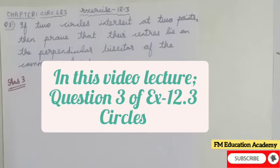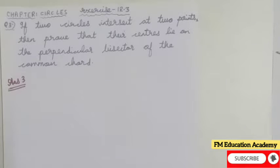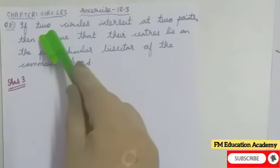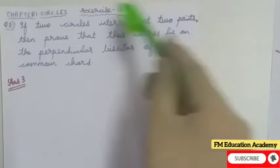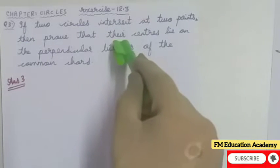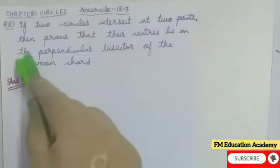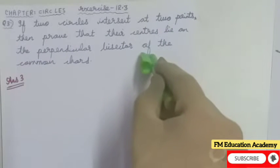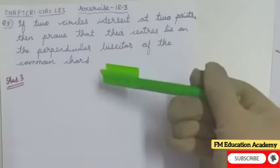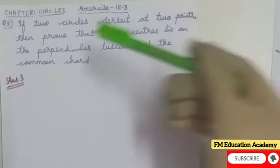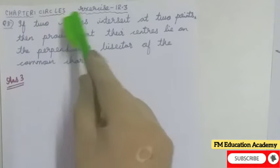In this video lecture we will be seeing question 3 of Exercise 12.3 from chapter Circles. The question is: if two circles intersect at two points, then prove that their centers lie on the perpendicular bisector of the common cord. First, let us understand what the question is asking.